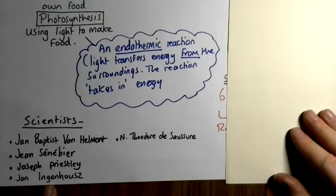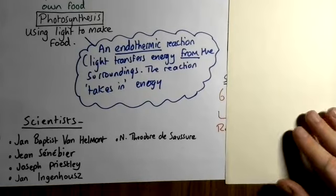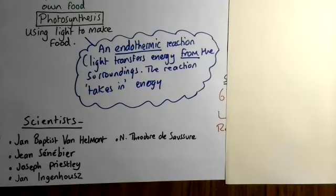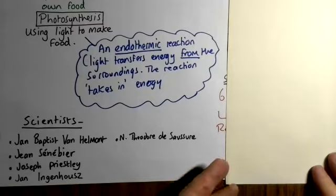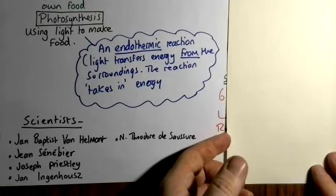Joseph Priestley, Ingenhaus and Theodore de Soiseur. And these all came up with different ideas for photosynthesis. But between them, they ended up coming up with the equation.